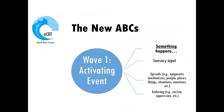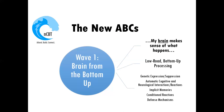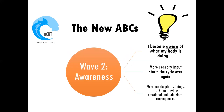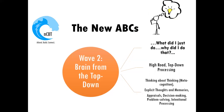In wave one, you have the activating event — that's the A — where something happens, the antecedent. Then you have wave one B, which is brain from the bottom up: the brain makes sense of what happens, often pre-consciously, without our awareness. Wave one C, or consequences, is where the body does what the brain tells it to do and responds instinctively and reflexively — often leading to the release of cortisol and adrenaline and threat detection. We then become aware of what the body is doing as more sensory input becomes involved.